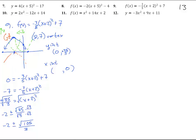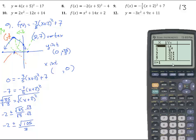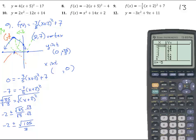Let's double check it on the calculator: negative 3 fifths times the quantity x plus 2 squared plus 7. Graph it — and there we have it, exactly right. You can find the maximum at negative 2, 7. Something useful to know: if you want to verify a vertex, you can use the table. Going up the table to x equals negative 2, you'll see the highest value of 7 pops out. This is just an xy table like we made for lines. The highest value is indeed 7.